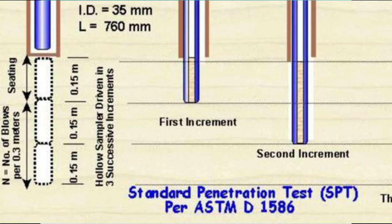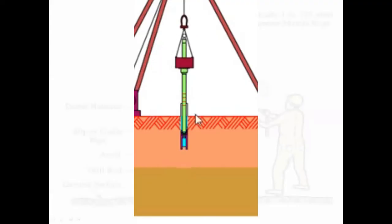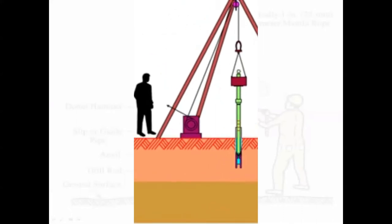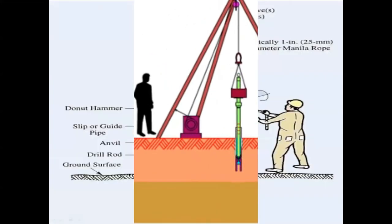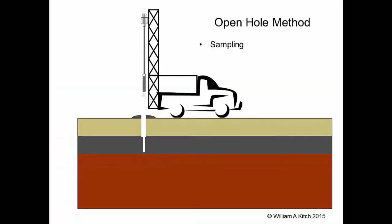The second 150 mm penetration and the third 150 mm penetration blow counts are recorded as n values at that particular depth of the borehole. The split spoon sampler is then withdrawn, and it is detached from the drill rod.